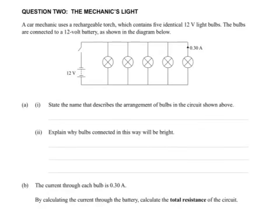Question 2, the 2012 Electricity Electromagnetism paper, Level 1. The Mechanic's Light: A car mechanic uses a rechargeable torch which contains 5 identical 12 volt light bulbs. The bulbs are connected to a 12 volt battery as shown in the diagram below. State the name that describes the arrangement of bulbs. It's parallel.